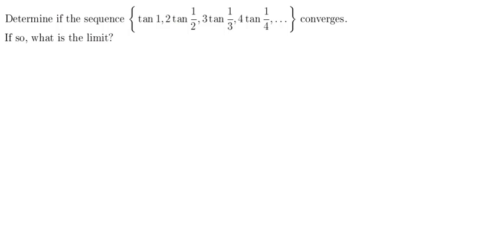So let's start off by writing a pattern down for the sequence, see if we can identify a pattern or a formula. We have the tangent of 1, 2 times the tangent of 1 half, 3 times the tangent of 1 third, 4 times the tangent of 1 fourth, as given to us.